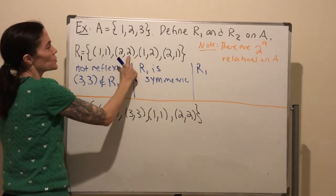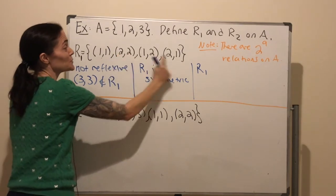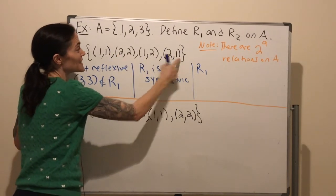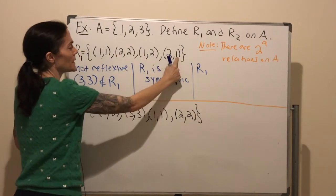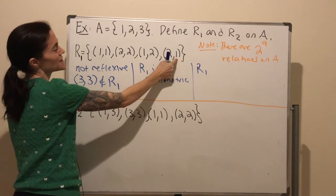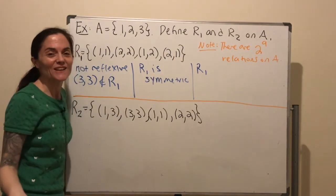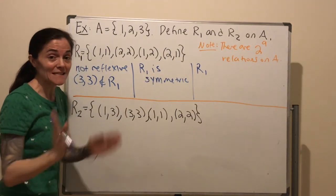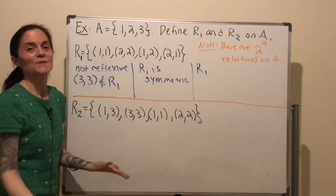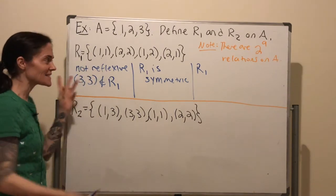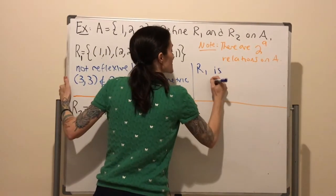We could also do (2, 2) and (2, 1) — the middle ones match, and we would need (2, 1), which is just this one. You can run through all different possibilities of having middle ones match, and you will see that R1 is transitive.